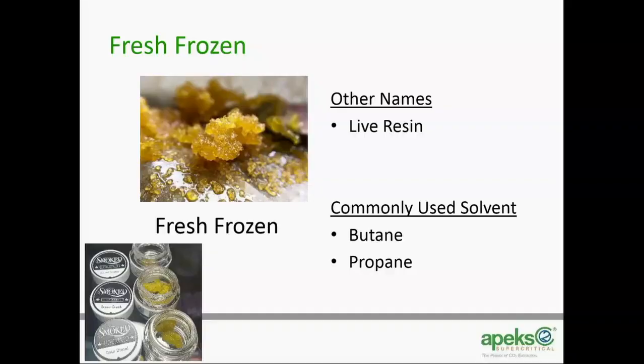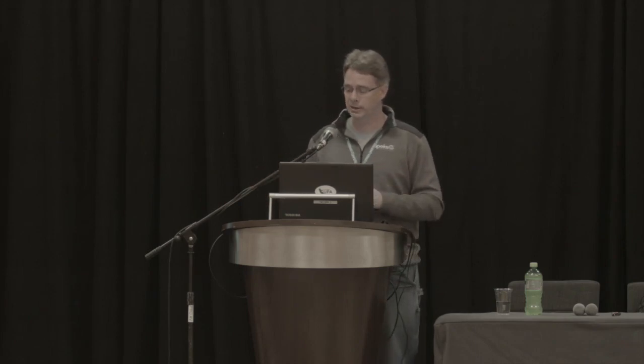Fresh frozen, or live resin, is done a little differently. Rather than using dried and cured plant material, you cut the cannabis plant down and freeze it immediately, then put it into butane and propane extraction systems. Because butane and propane don't like water and run at cold temperatures below freezing, any water molecules in the plant material stay behind, and generally just the terpenes and cannabinoids come through. These live resin or fresh frozen products are very popular because they're very terpene-rich — they retain a lot of the original terpenes that a cured plant material would lose when dried. This gives a more flavorful experience for a dabbing environment.